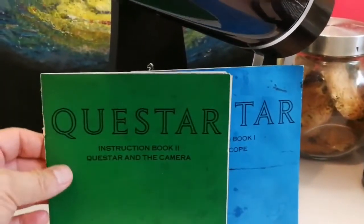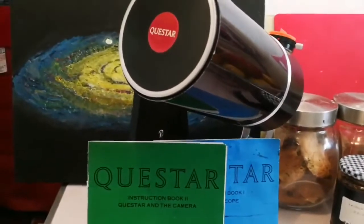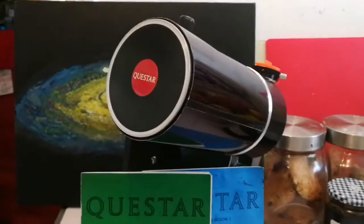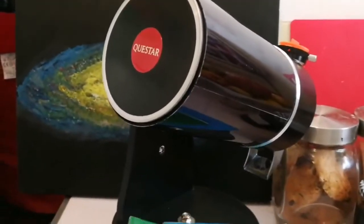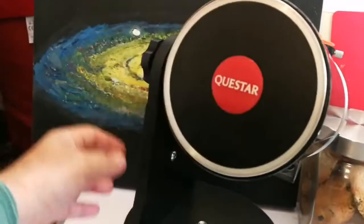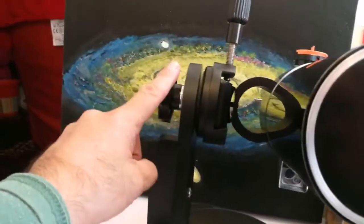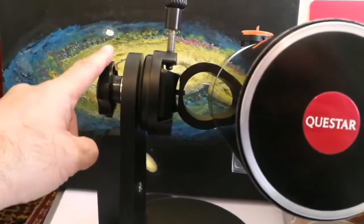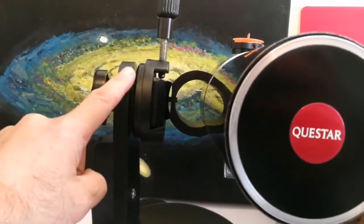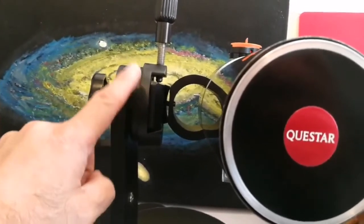Let me show the Dobsonian mount that I was talking about. This is the Questar telescope and this is the Dobsonian mount of the Skywatcher Heritage Virtuoso. Is it Virtuoso? Yeah. Anyway, this is the 4-inch one.